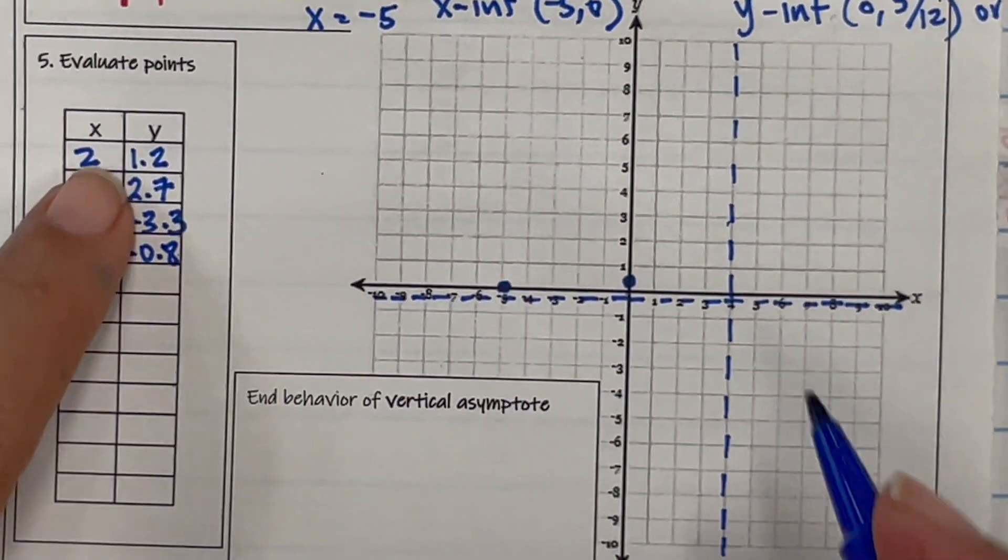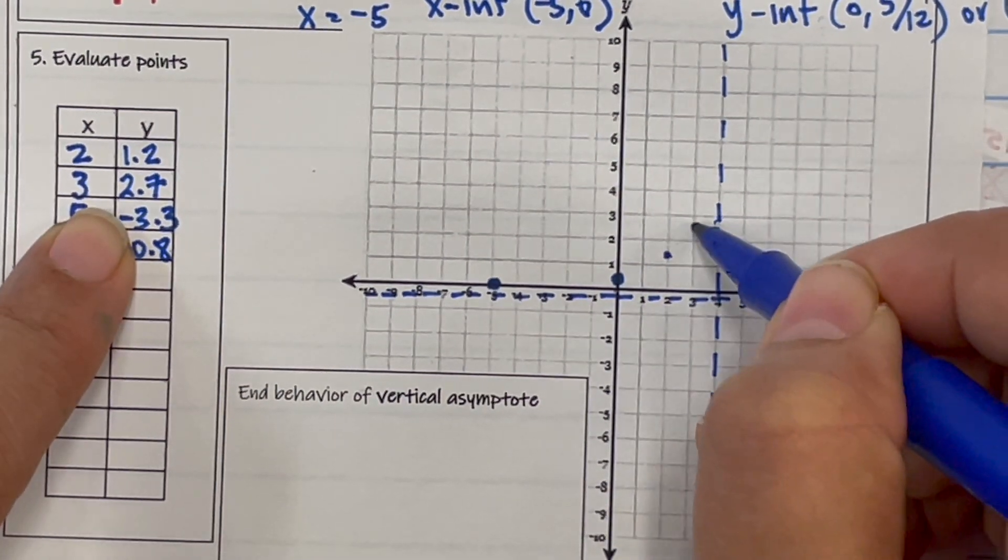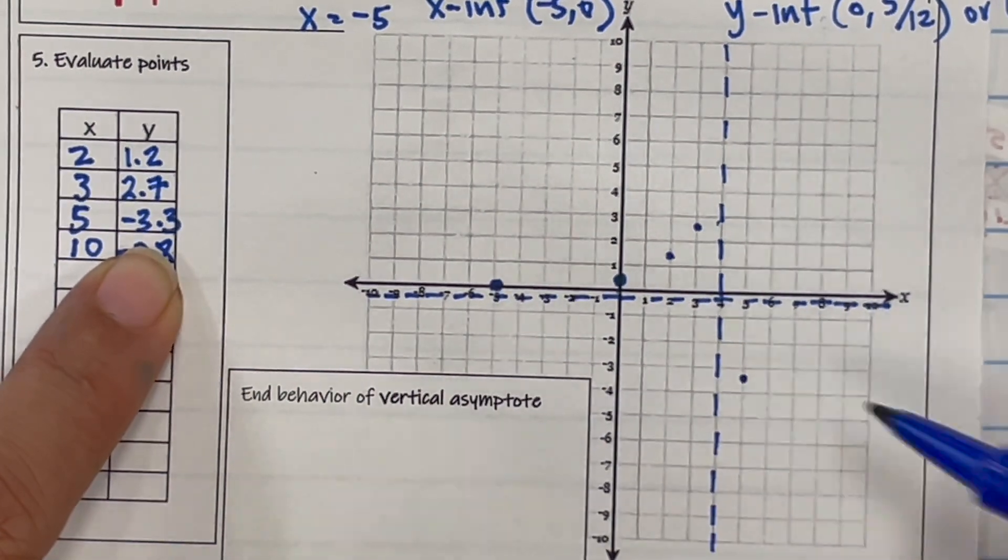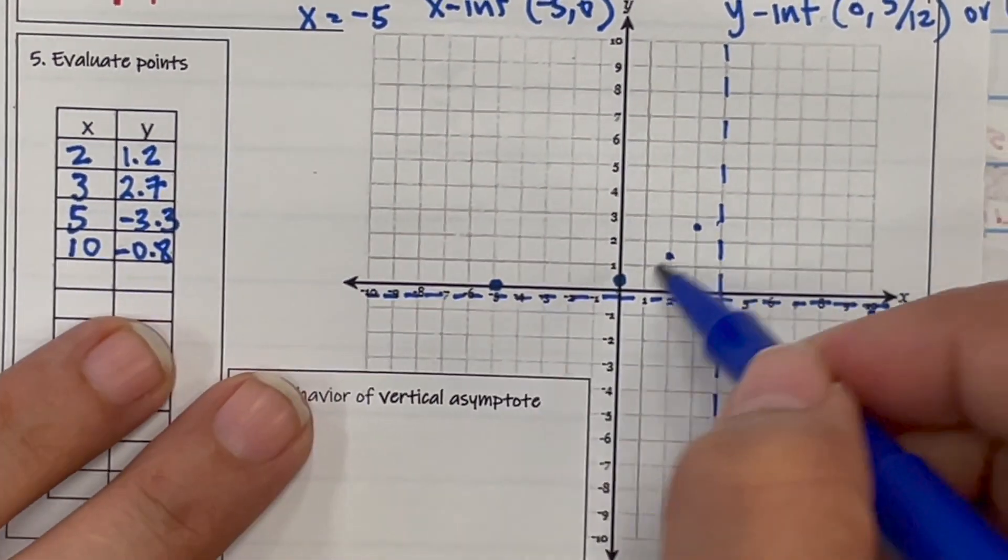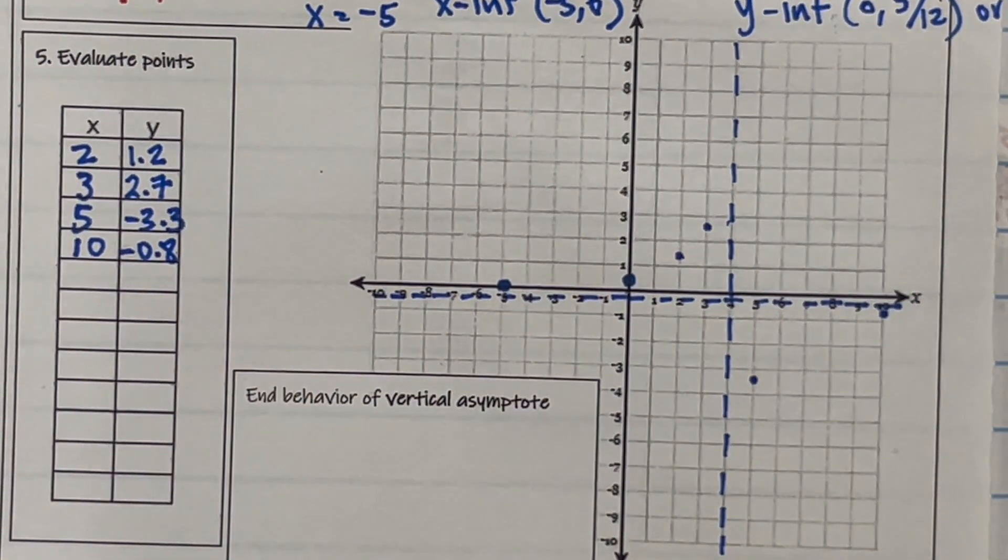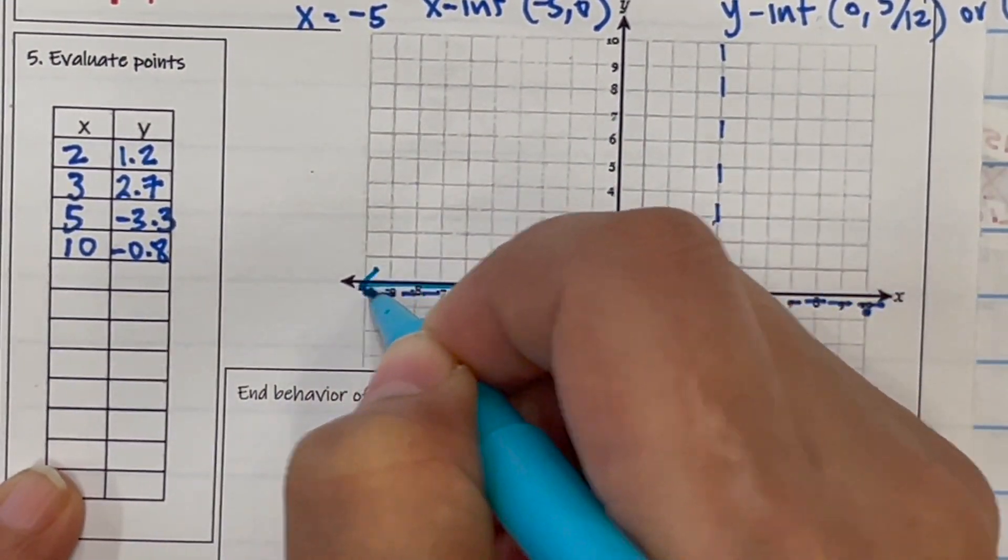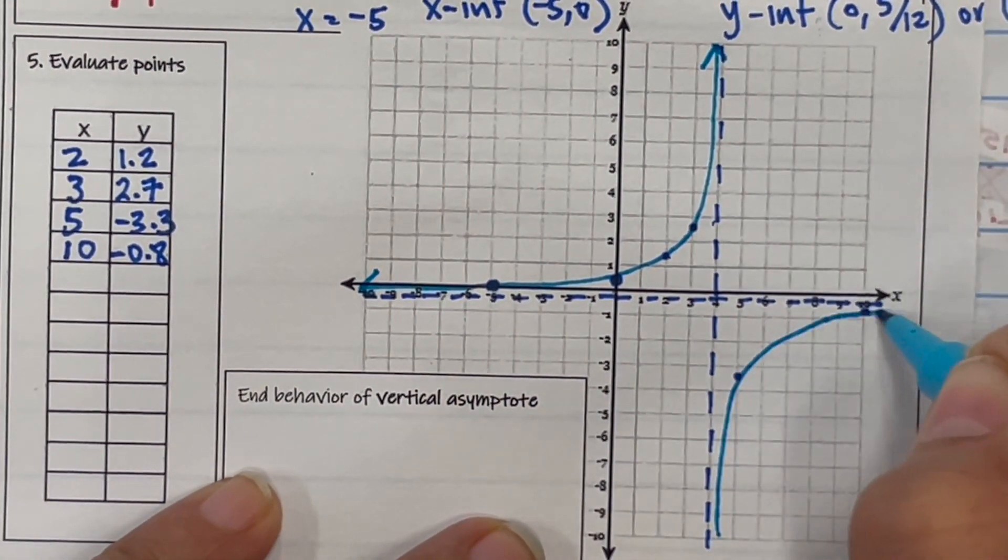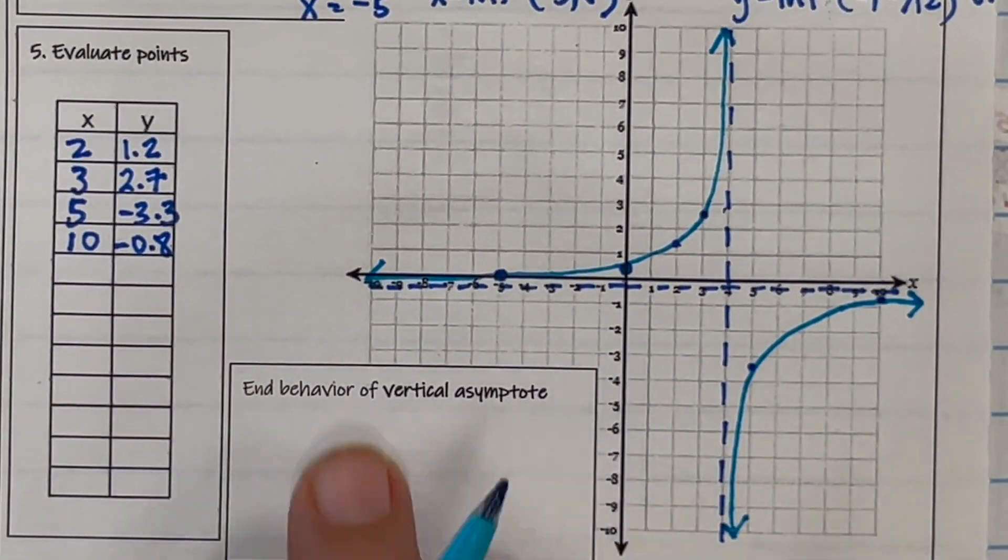Now we're going to plot those points. So 2 and 1.2 to the best of your ability. 3 and 2.7. 5 and negative 3.3. 10 and negative 0.8. And that's what the graph is doing. So kind of join the points. Don't pass the asymptotes. So it'll look like this, that way, and that with an asymptote. And this one will look like this, and that with an asymptote. And that's how you graph asymptotes. So five steps.